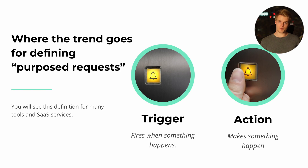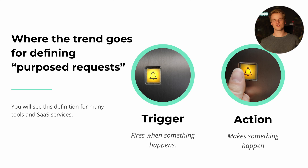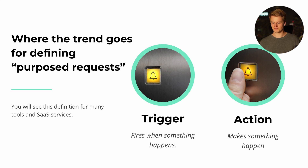In discussions about APIs or webhooks, I often talk about triggers and actions — what I call purposed requests. Tools like Make.com and Zapier use these terms in their documentation. Triggers are basically what webhooks do: they fire on a specific event. Actions are the equivalent opposite — with an action, you actually do something. Think of a doorbell: the trigger is the bell ringing, and the action is the finger that presses the button.